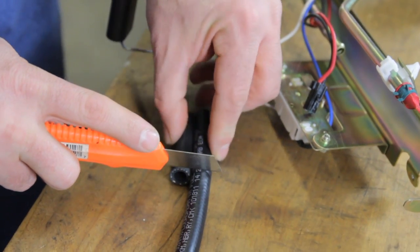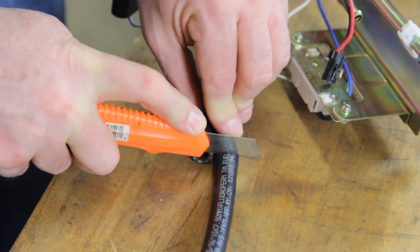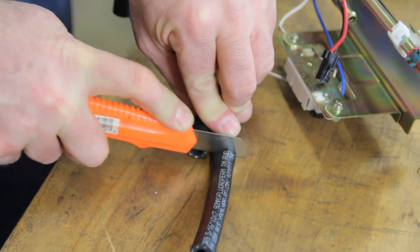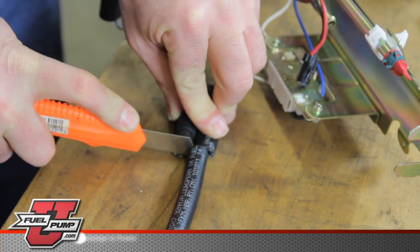Now that we've removed the pump, we'll begin the reinstallation. Take the old hose. We use it as a guide in cutting the length of our new hose.